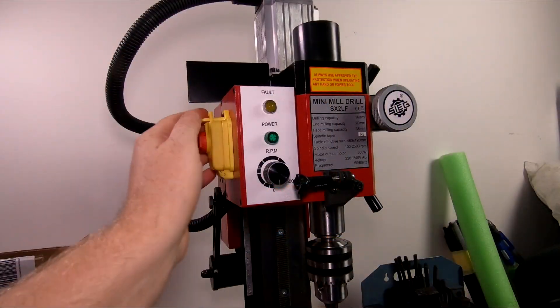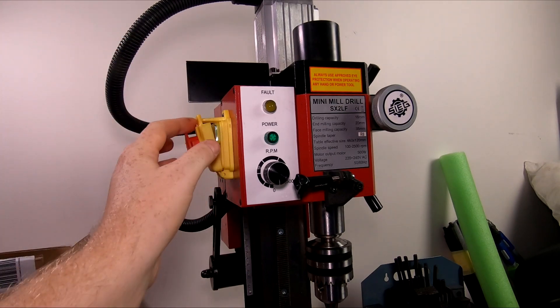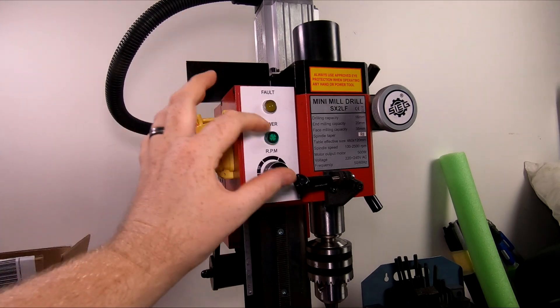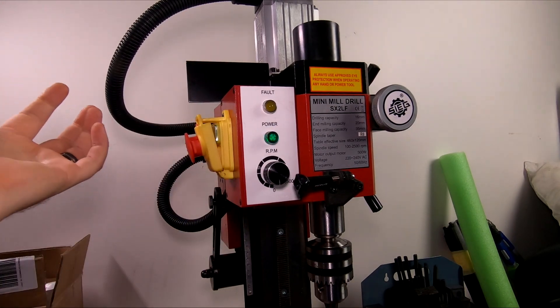At the top here, you've got your kill switch here. You can see here, which is your on button as well. When you hit it, it kills it. It's pretty simple. Fault light, power light. When you're on, you see the green light come on.